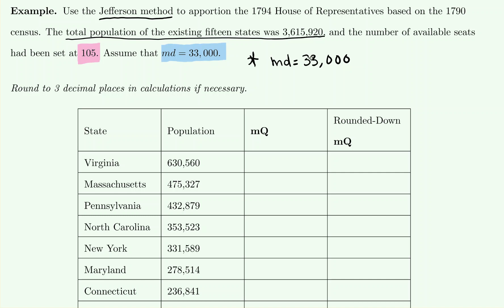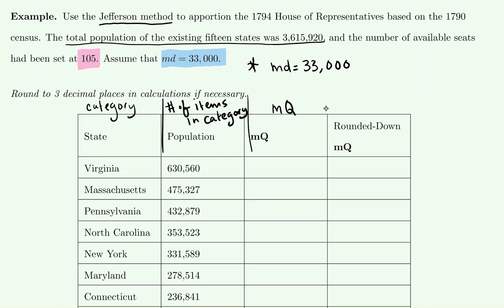The table has already been written out for us. When constructing your own table, you list the category first — in this case, the different states — then the population, then the modified quota column, and then the rounded MQ column. For the Jefferson method, we always round down. We are asked to round to three decimal places in calculations if necessary.